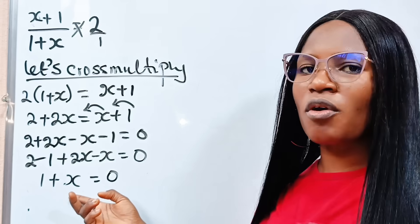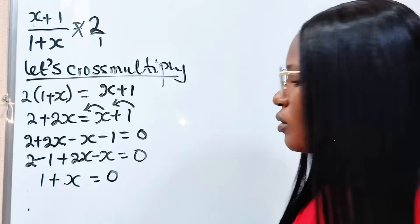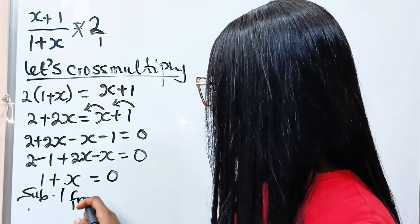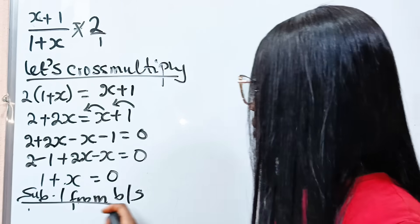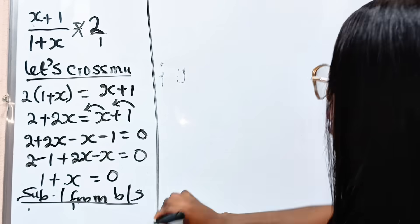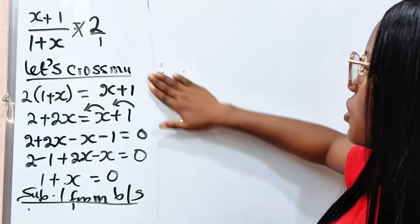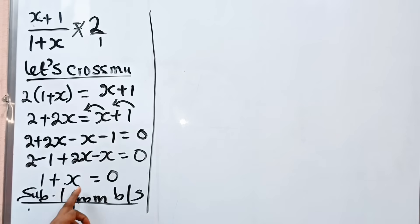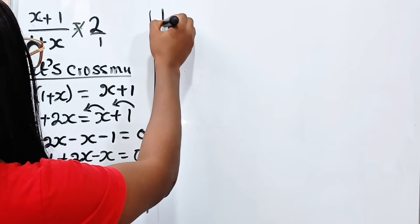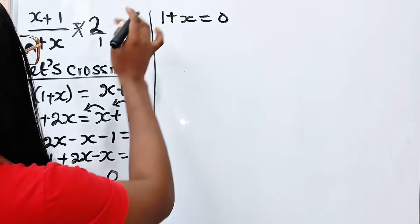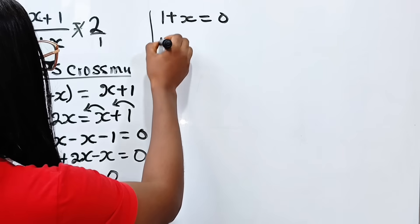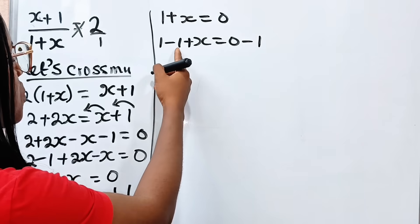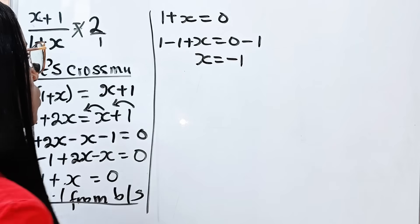Now, 2 minus 1 is 1, plus 2x minus x is x, is equal to 0. Now we are looking for the value of x, so let's subtract 1 from both sides. We will have 1 plus x equals 0, so subtracting 1 from both sides, we have 1 minus 1 plus x is equal to 0 minus 1. 1 minus 1 is 0, so we have x is equal to minus 1.